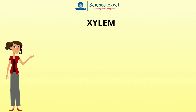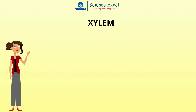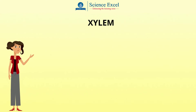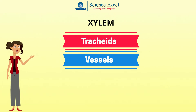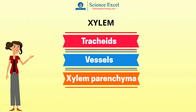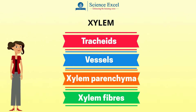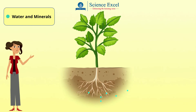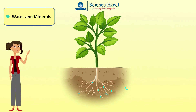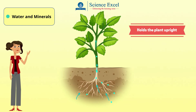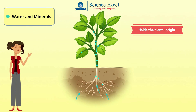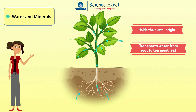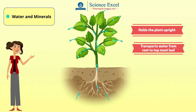So what is the xylem tissue made up of? The xylem tissue consists of four different types of elements: tracheates, vessels, xylem parenchyma and xylem fibers. The functions of xylem are to help hold the plant upright and to provide a pathway for water to move from the roots all the way up to the very topmost leaves.